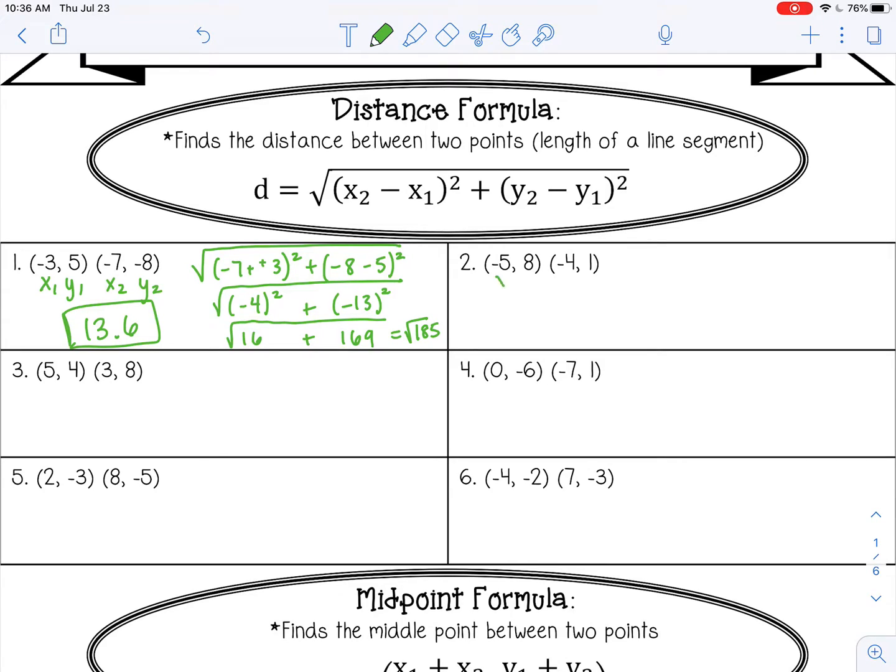For the next one, x sub 2 minus x sub 1, y sub 2 minus y sub 1. So negative 4 plus 5, that's 1. 1 minus 8, that's negative 7. That would give me 1 plus 49, which is the square root of 50, which gives me about 7.1.